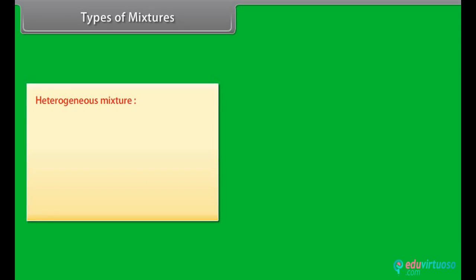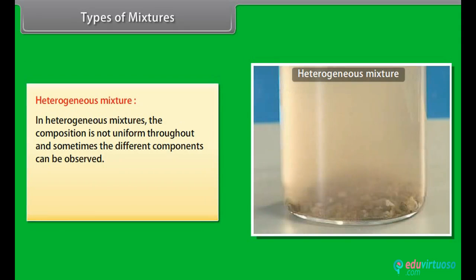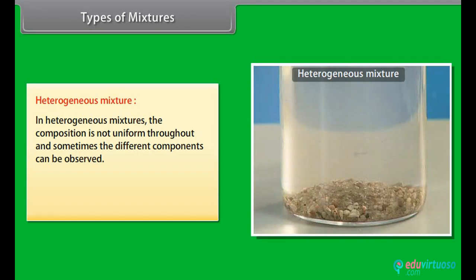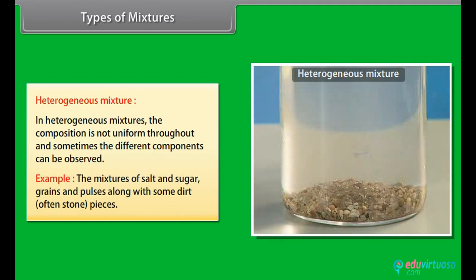In heterogeneous mixtures, the composition is not uniform throughout and sometimes the different components can be observed. Example: The mixtures of salt and sugar, grains and pulses along with some dirt, often stone pieces.